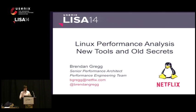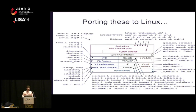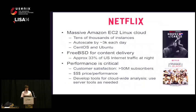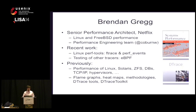Thanks, Amy, and it's great to be back here at another LISA. My talk today is about porting a lot of the tools I've created in the past that use DTrace to Linux. Now that I've moved to Netflix, I'm doing a lot of performance work primarily on Linux and missed some of my tools. Netflix has a massive Amazon EC2 Linux cloud, tens of thousands of instances, and performance is critical. I'm Brendan Gregg and I'm going to be talking about some of the Linux performance work I've been doing this year.